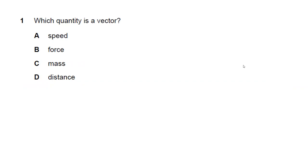Question one: which is a vector quantity? Speed? No, speed is a scalar quantity. Force? Yes, it's a vector quantity. Mass? No, it's a scalar quantity. Distance? No, it is a scalar quantity. Remember, a vector quantity has both magnitude and a specified direction. So answer B is the right answer.